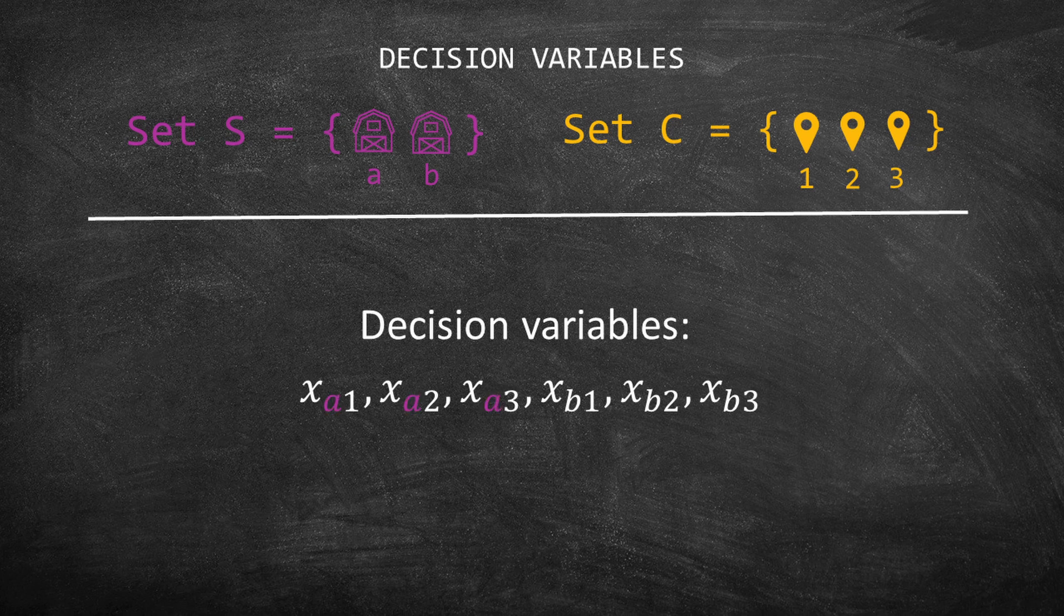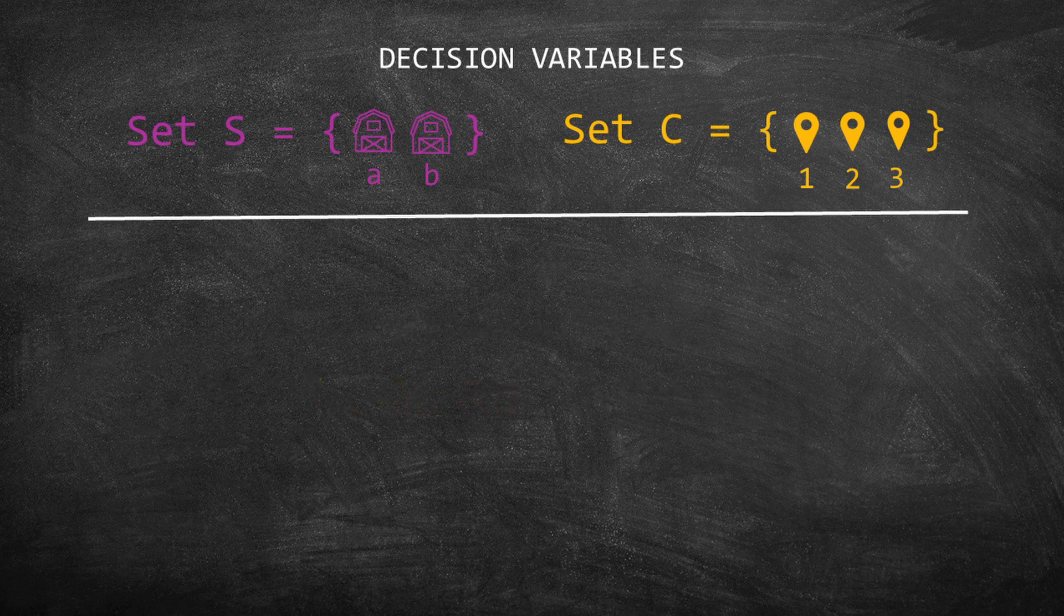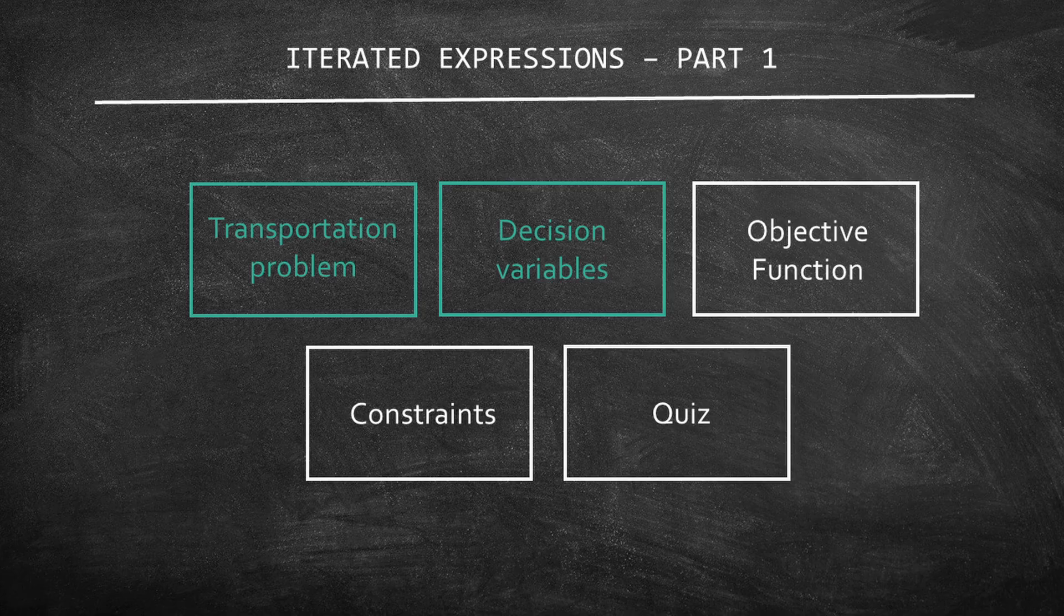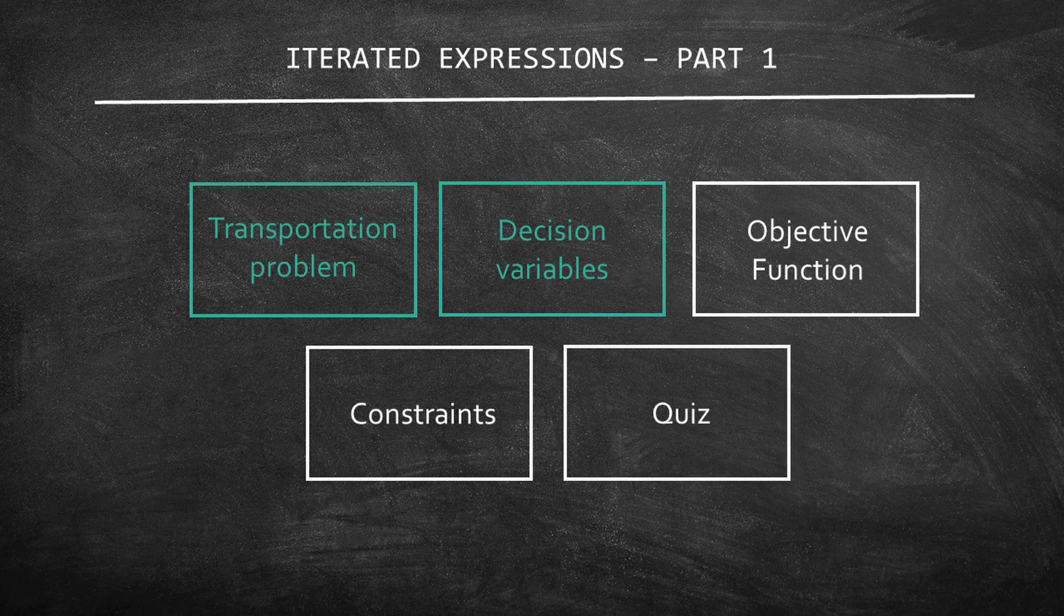For example, we combined A with 1, 2, and 3 so that we have variables xA1, xA2, and xA3. In operations research, we write xij for i in S and j in C to represent that every element in S is going to be combined with every element in C. In other words, we can define the decision variable xij as the flow of product from supplier i to customer j. Now that we have written the decision variables in the compact form, let's do the same with the objective function.